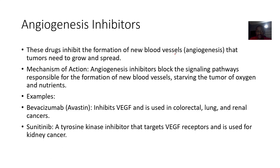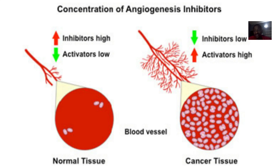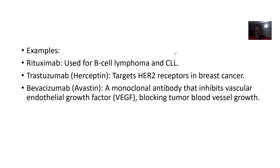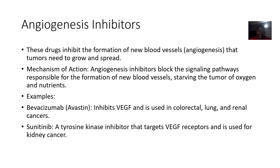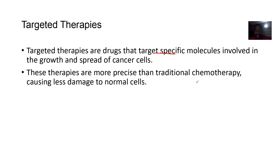Angiogenesis inhibitors work because cancer cells need a large, specialized blood supply to keep growing — many blood vessels form specifically to feed the tumor. Angio means blood vessels, genesis means formation, so these drugs stop the formation of new blood vessels around the cancer. Examples include bevacizumab and sunitinib. They block the signaling pathways for new blood vessel formation, effectively starving the tumor cells of the extra oxygen and nutrients they need.